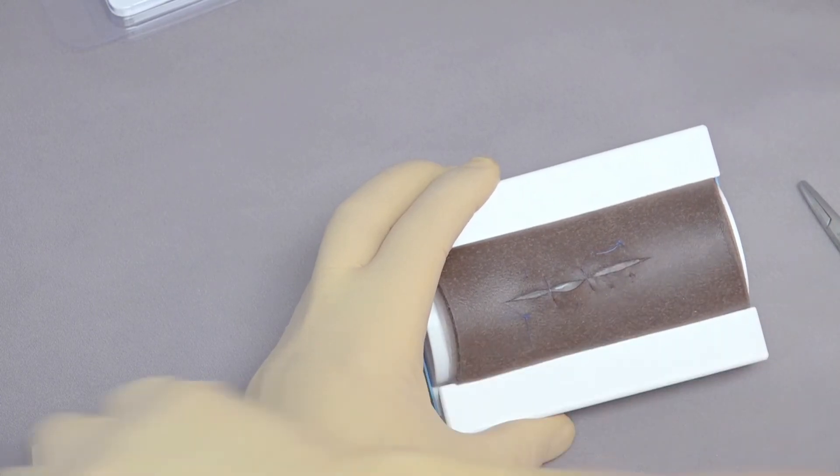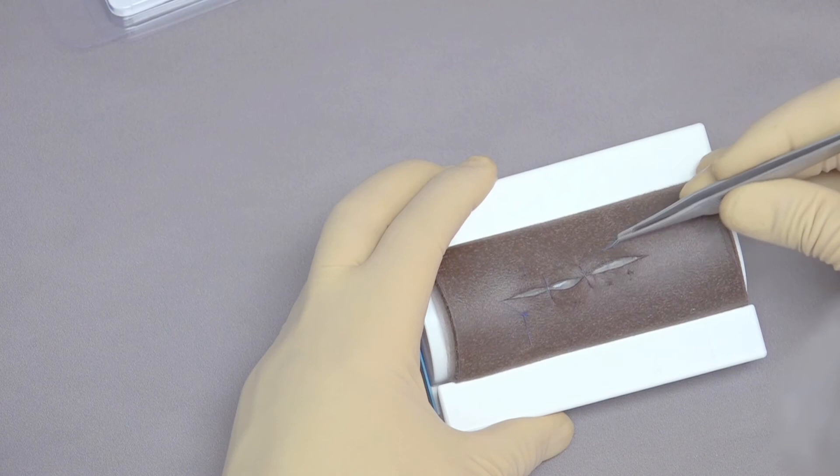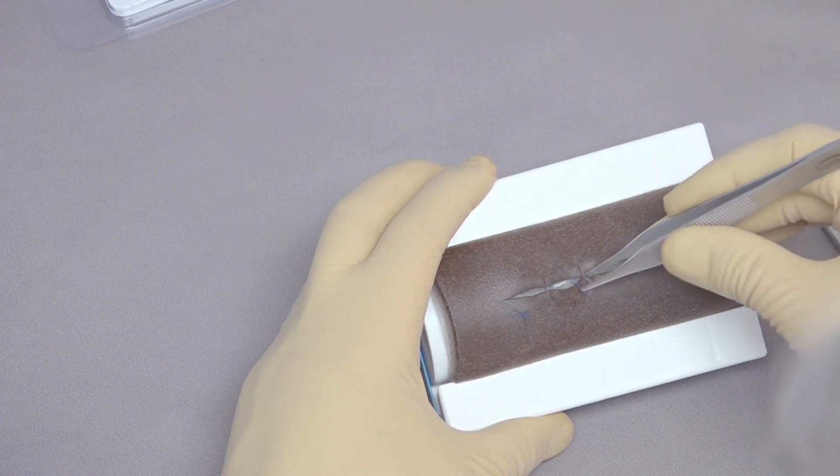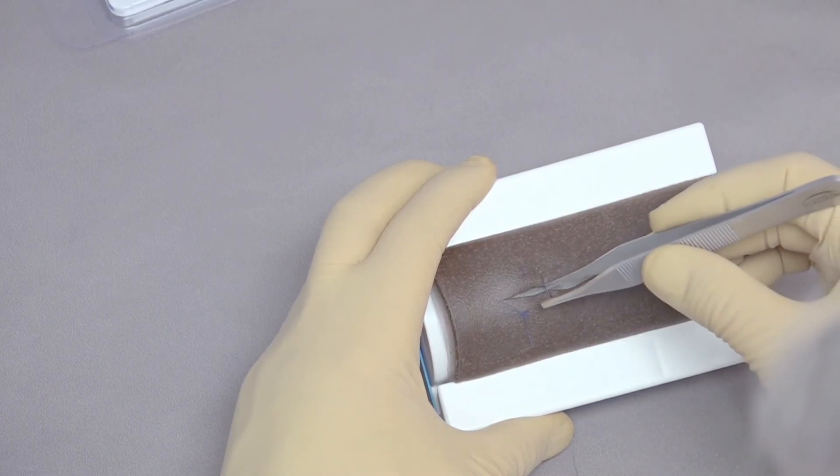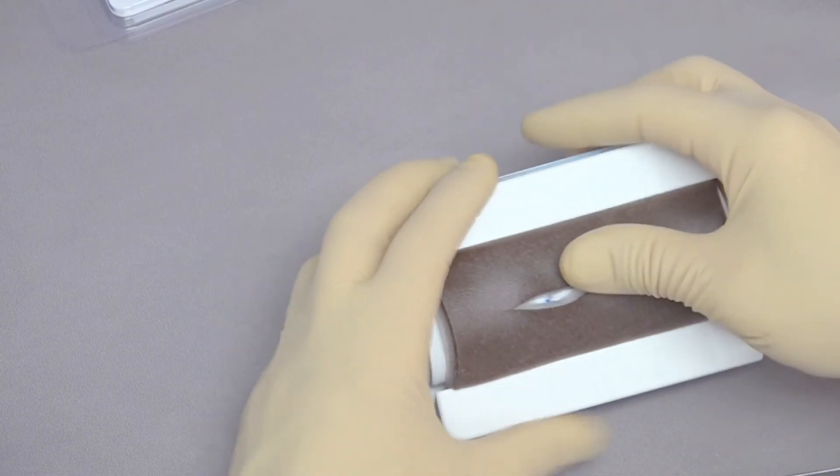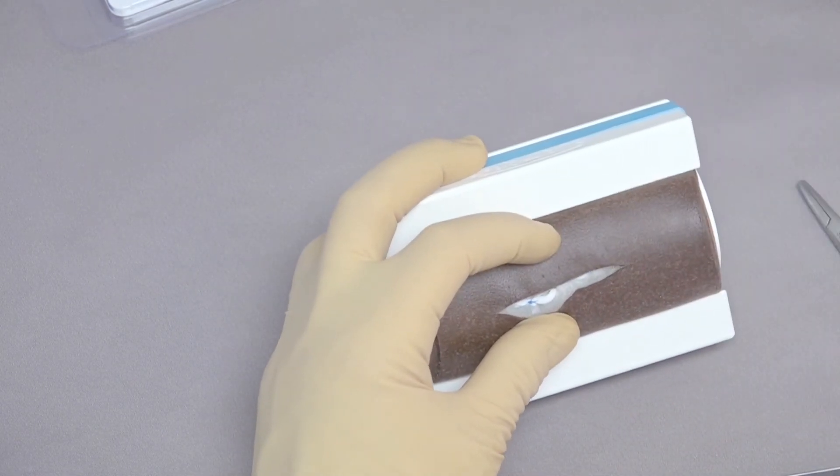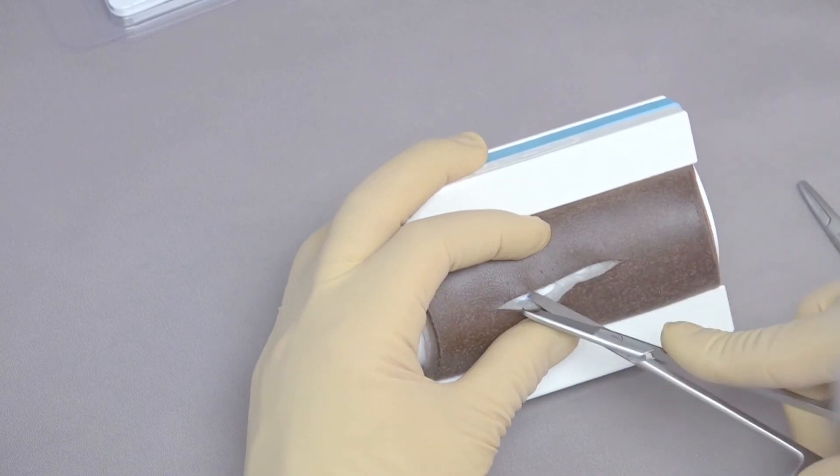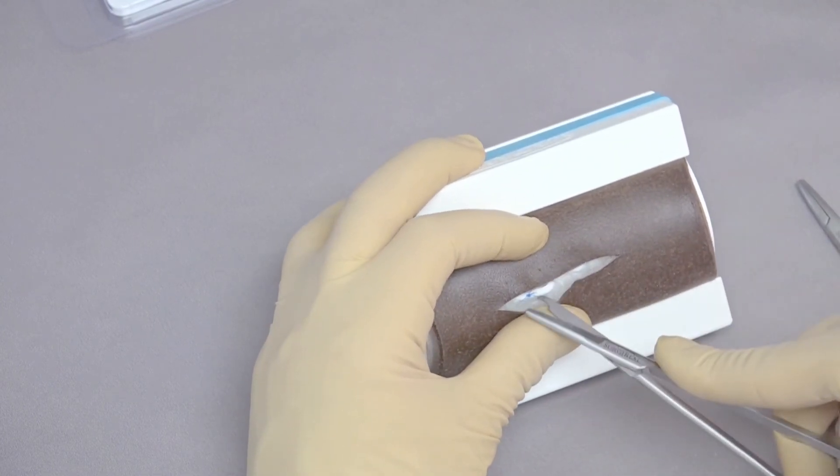And the loop, use your thumb forceps to remove that suture material. Come down into our deeper layer. And again, remove those.